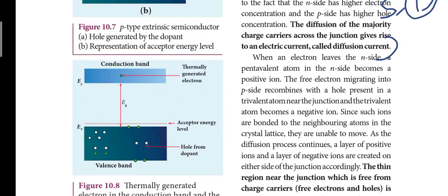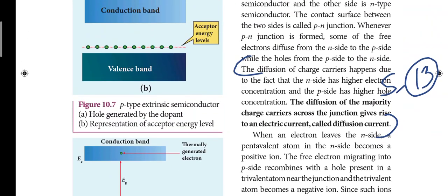Next, page number 202. The diffusion of majority charge carriers across the junction rises to an electric field called diffusion current. That is on the right side. This is the 13th short answer.